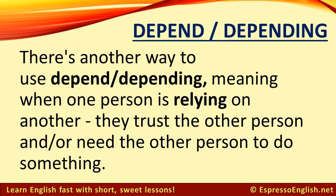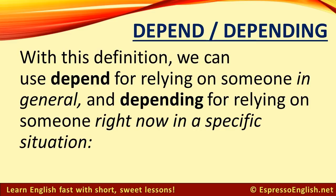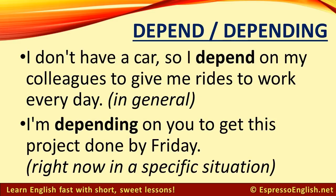There's another way to use depend or depending, meaning when one person is relying on another — they trust the other person and need the other person to do something. With this definition, we can use depend for relying on someone in general, and depending for relying on someone right now in a specific situation. For example: I don't have a car, so I depend on my colleagues to give me rides to work every day. But: I'm depending on you to get this project done by Friday — meaning right now in a specific situation.